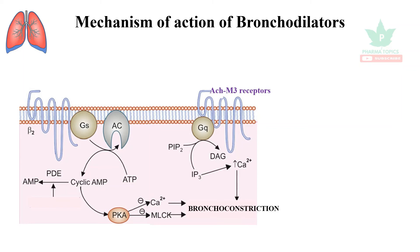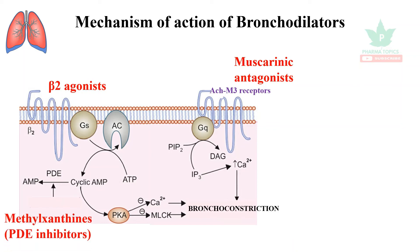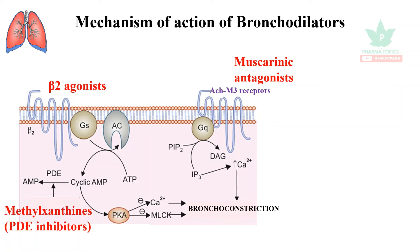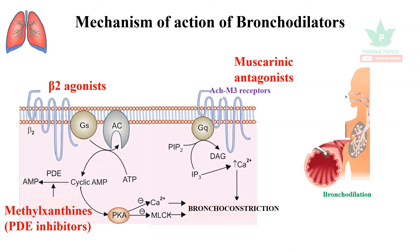Bronchodilators work through three mechanisms: first, activation of beta-2 receptors via beta-2 agonists; second, blocking acetylcholine M3 receptors via muscarinic antagonists; and third, extension of the half-life of cyclic AMP by phosphodiesterase inhibitors such as methylxanthines or PDE4 inhibitors. All these improve airway breathing and lead to bronchodilation.